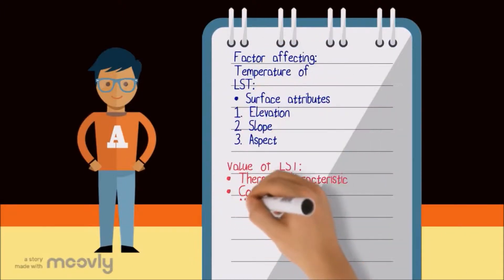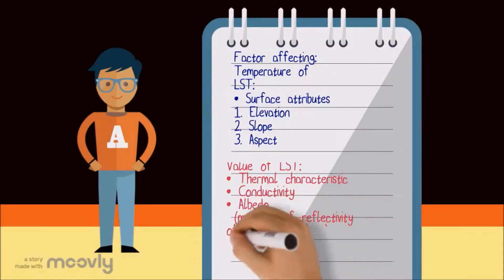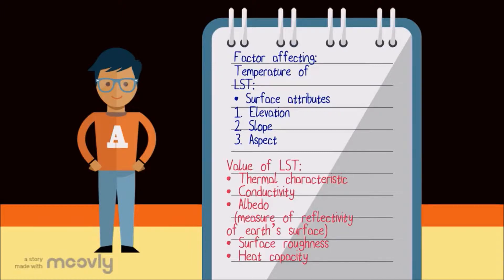The factors affecting temperature of LST are surface attributes. Examples of surface attributes are elevation, slope, and aspect. The factors affecting the value of LST are thermal characteristics, conductivity, albedo, surface roughness, and heat capacity.